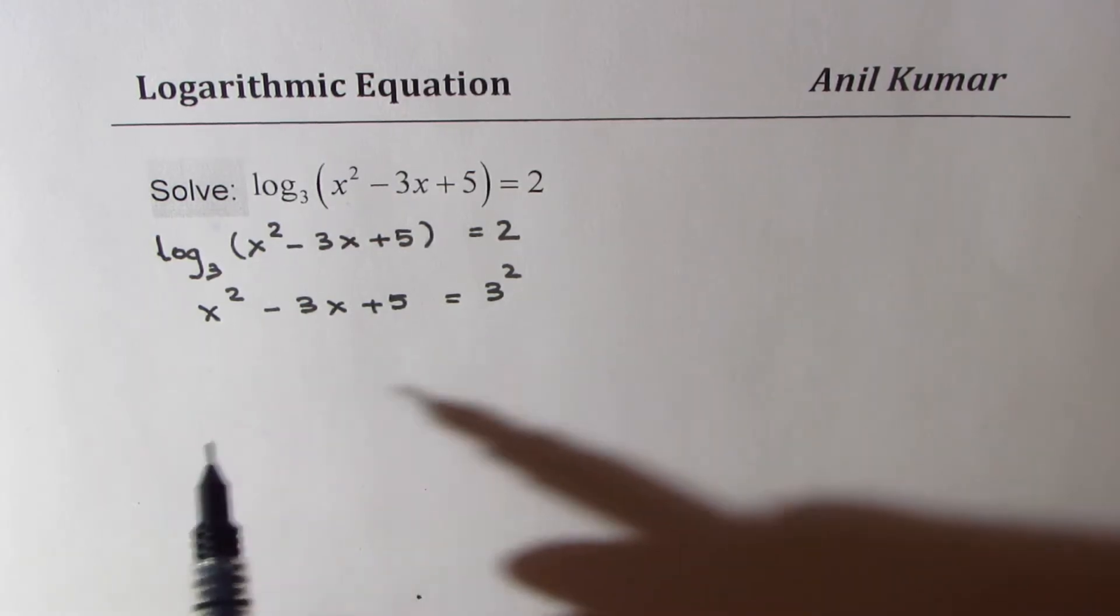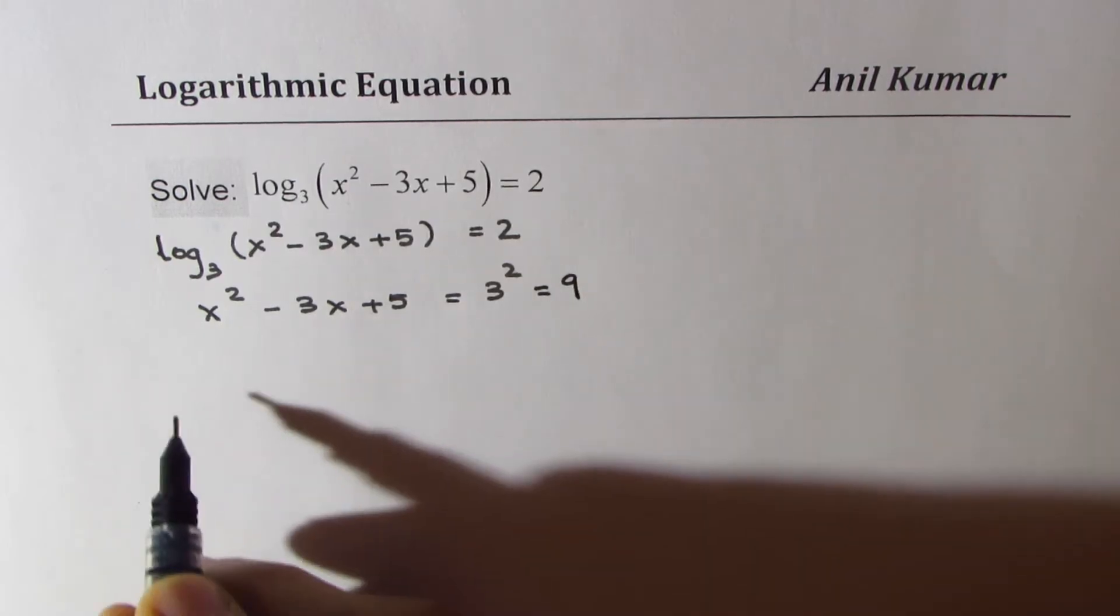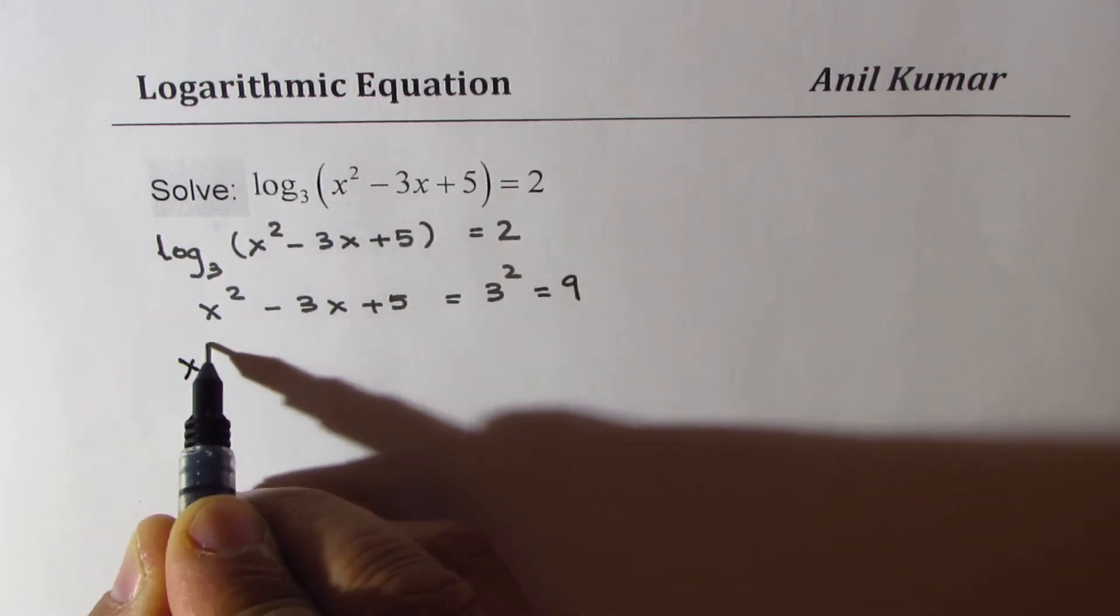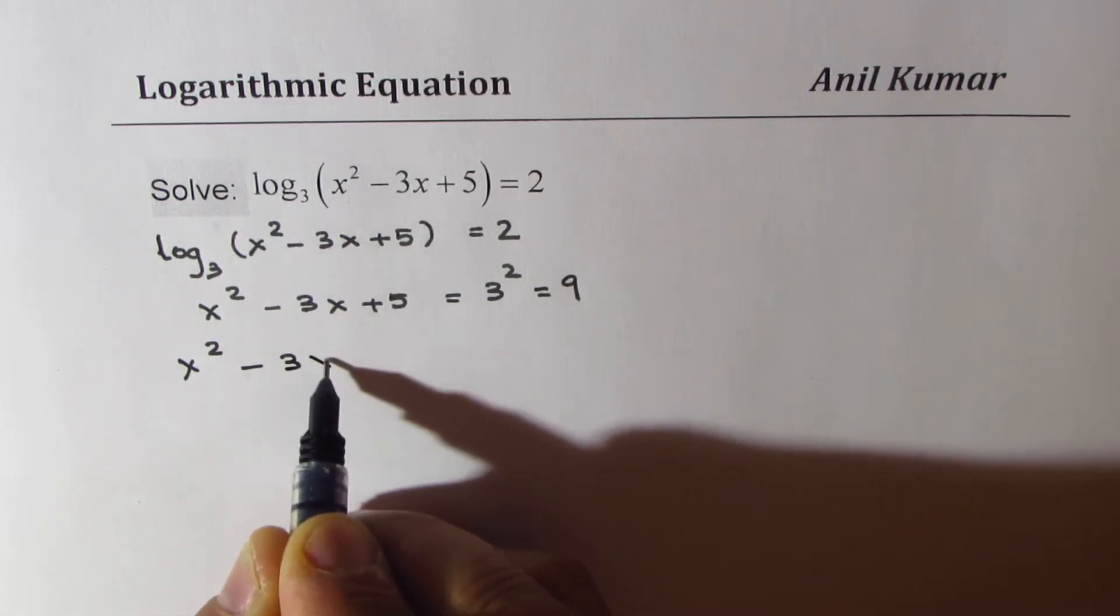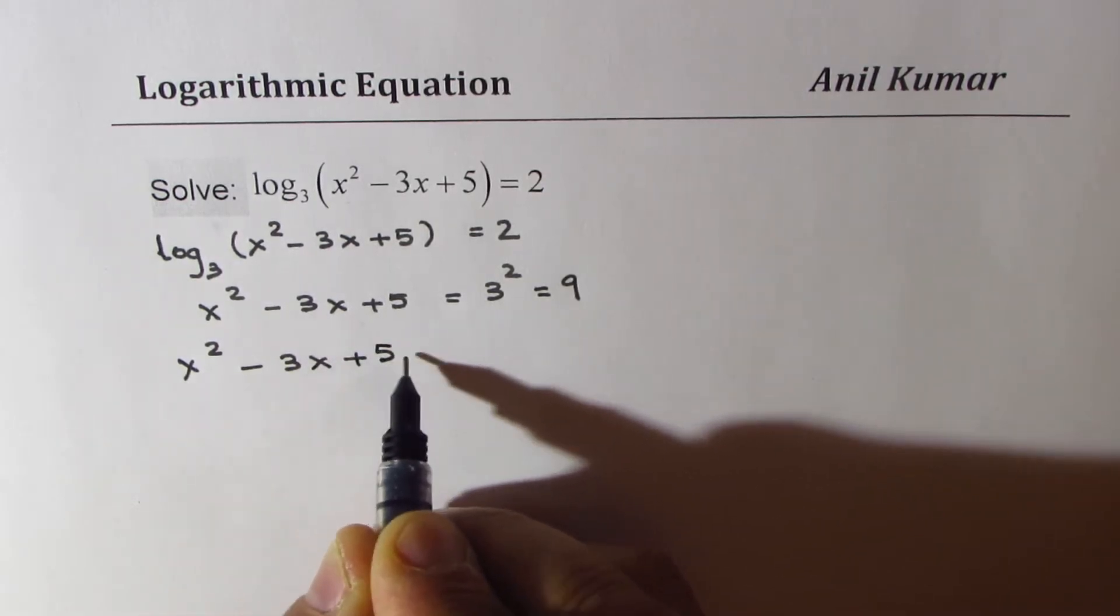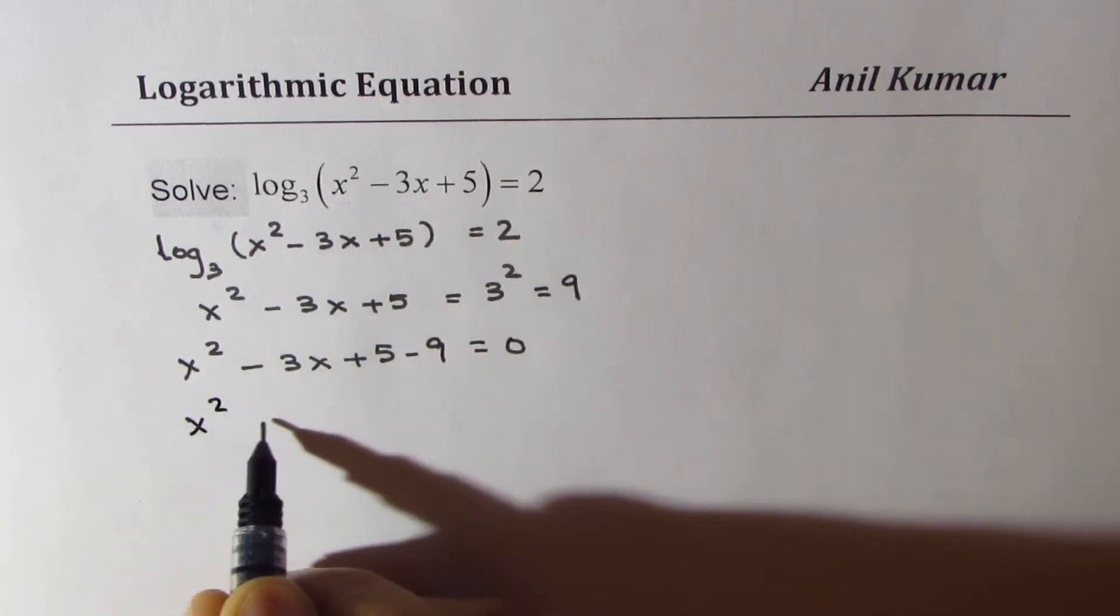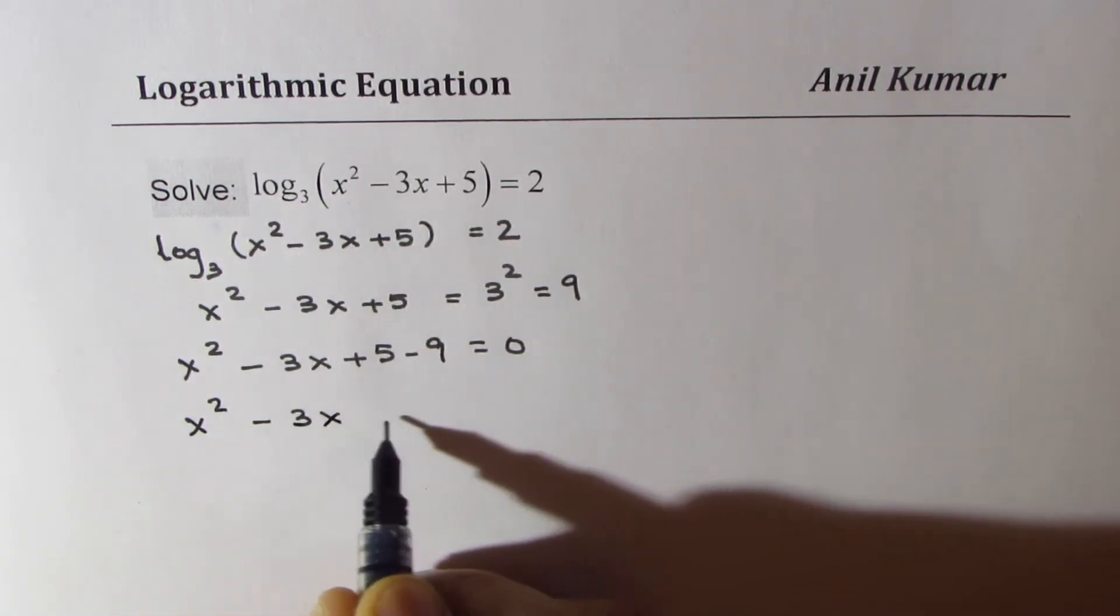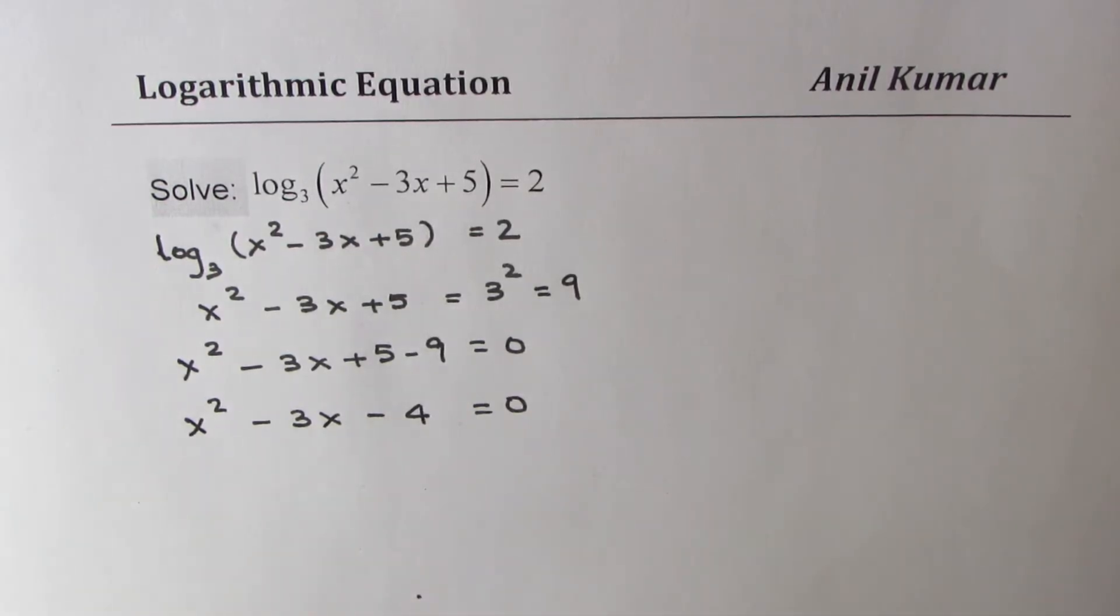We can bring 3² to the left hand side. 3² is 9, so bringing it to the left side we get x² - 3x + 5 - 9 = 0, that is x² - 3x - 4 = 0.